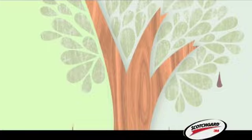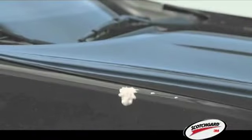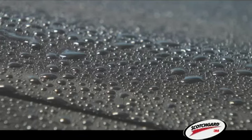You can't stop bugs from splatting, water from splashing, tree sap from oozing, or bird droppings from dropping. But you can safeguard your car's exterior with Scotchgard, so the paint looks newer, longer, and droppings stay above the surface and clean off easily.